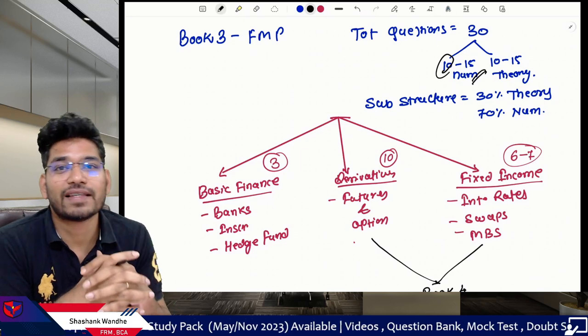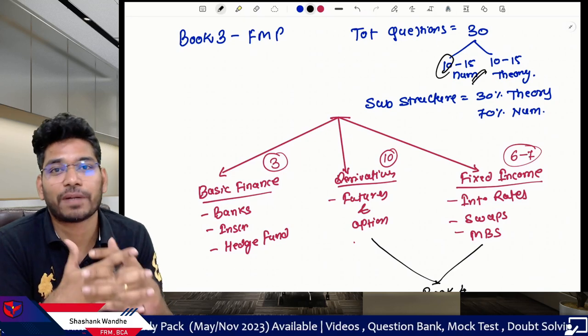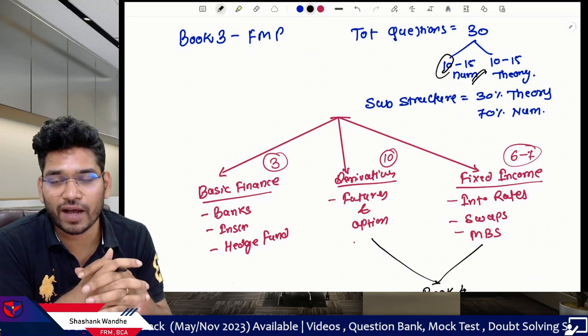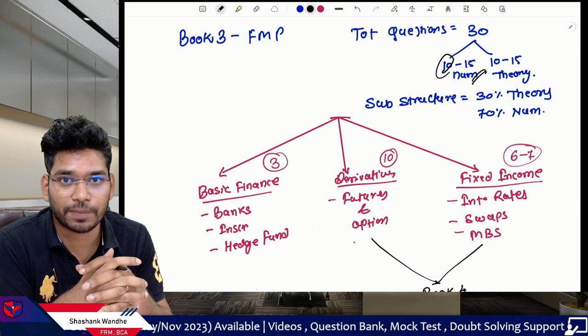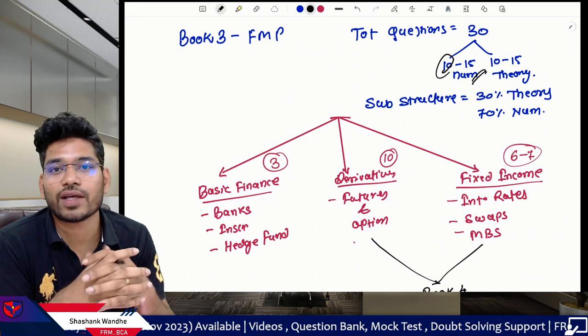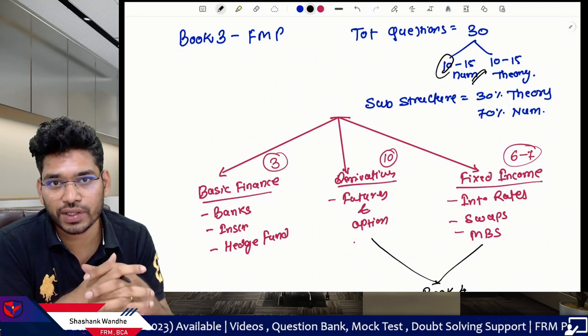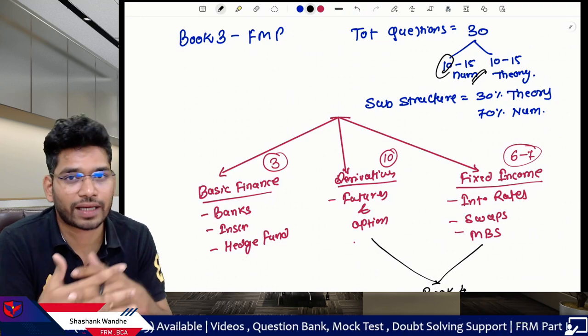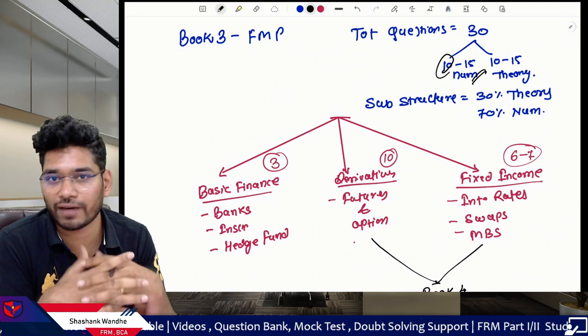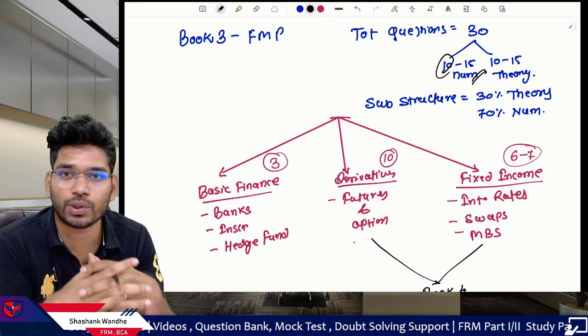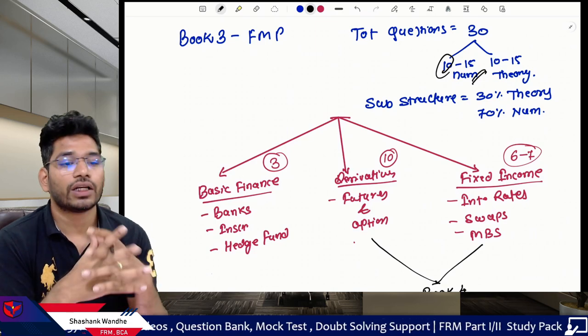Hi friends. In this session we will discuss the preparation strategy of FRM Part 1's Book 3, Financial Markets and Products. In case you are looking for preparation strategy of other books like Book 1, 2 or 4, the link is available in the description, so do check out.